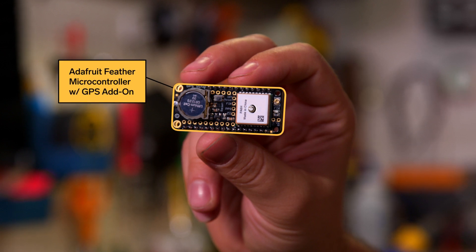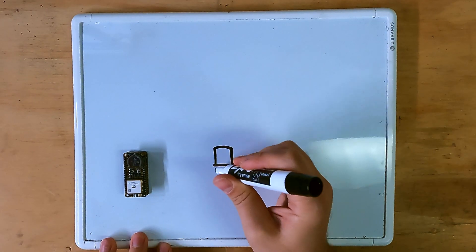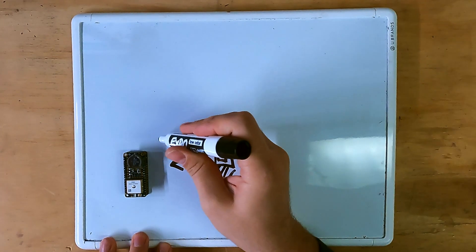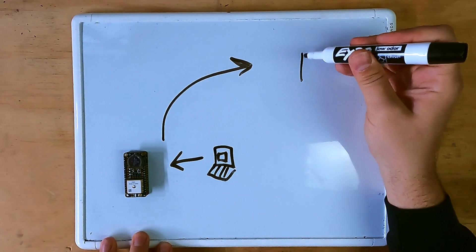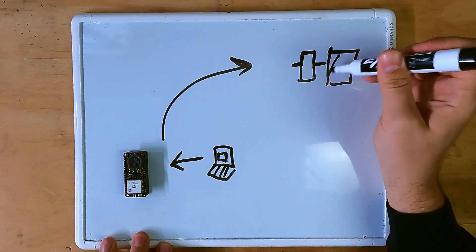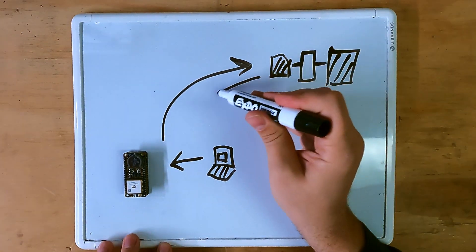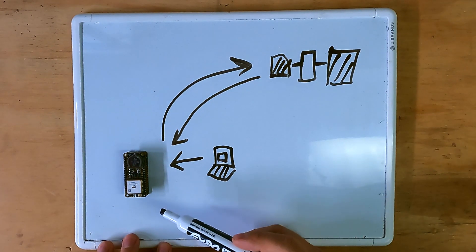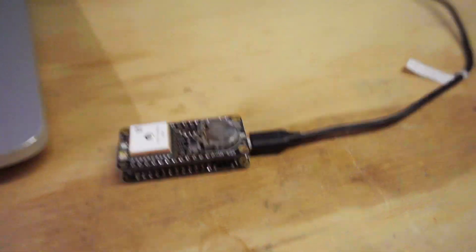So this is an Adafruit Feather microcontroller with a GPS add-on. And what this allows me to do is use a computer to write code to basically use this GPS to communicate with a satellite. If I receive a transmission back, I can determine my latitude and longitude anywhere on the globe.